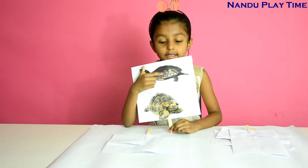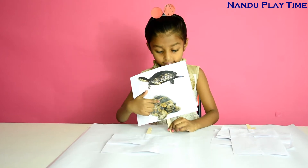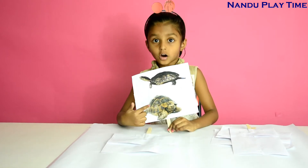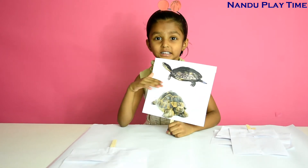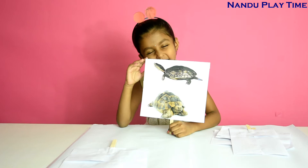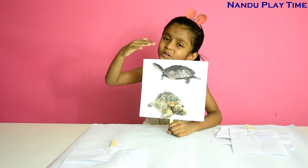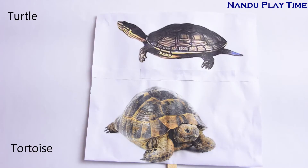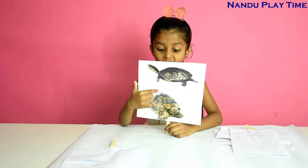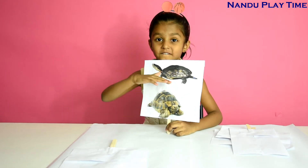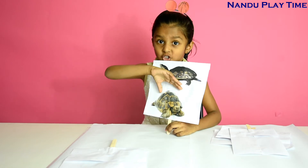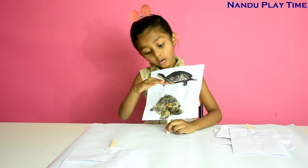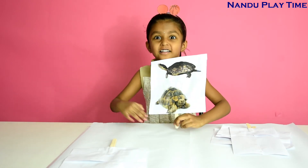This is turtle, this is tortoise. Turtle has a very lighter shell and also a flatter shell. Tortoise has a very domed shell and also a very heavier shell.